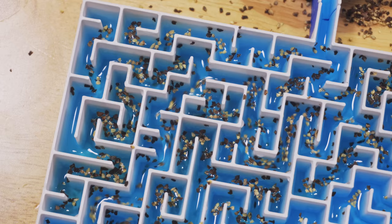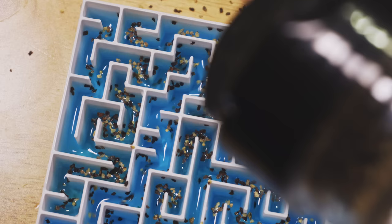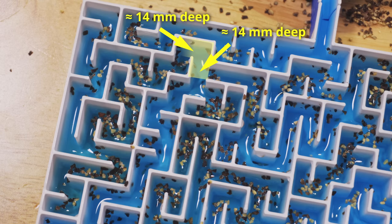If we look at an individual junction, water flows in from here, and water could flow out from either here or here. If we look really closely, the water level on this side, the incorrect direction, is the same as the input water level.